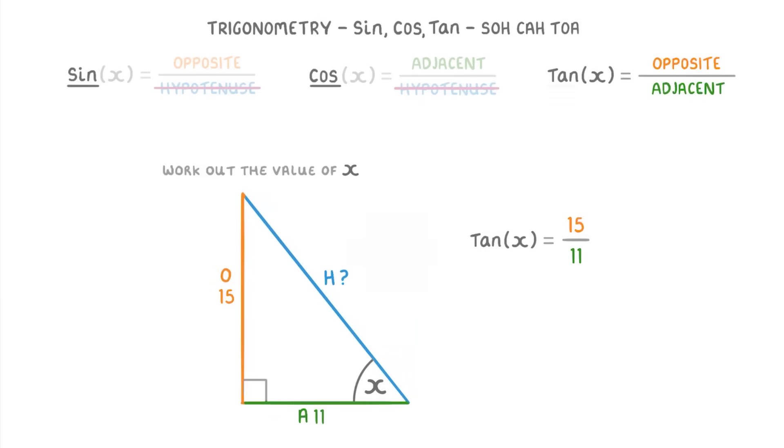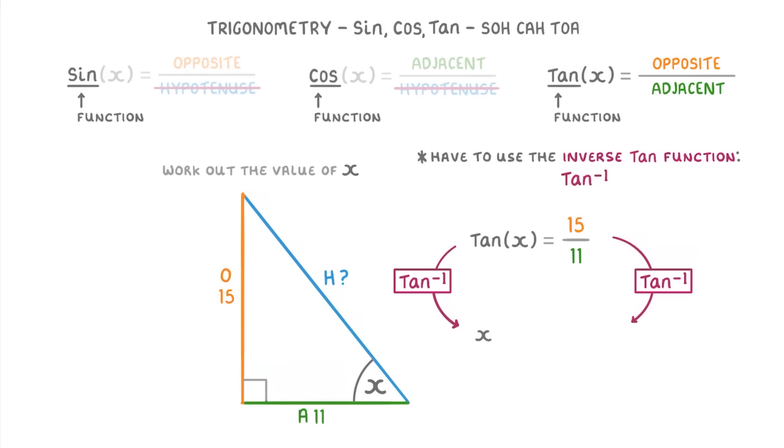Now solving this is actually a bit weird because sin, cos, and tan are all functions rather than numbers. And this means that we can't just divide both sides by tan to get X by itself. Instead, we have to use the inverse tan function, which is tan to the power of minus one. And on your calculator, you can probably find it by pressing the shift button and then pressing the tan button. When we apply this to both sides, we end up with X by itself on the left and tan to the minus one of whatever we had on the right. So in our case, tan to the minus one of 15 over 11.